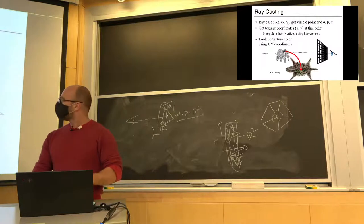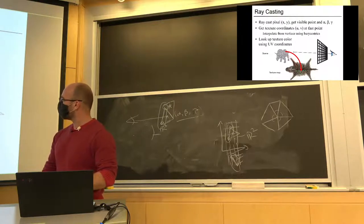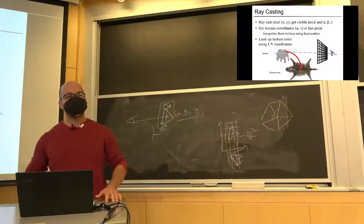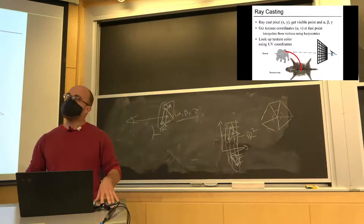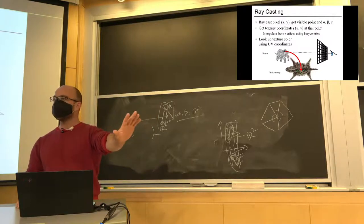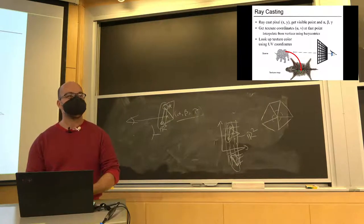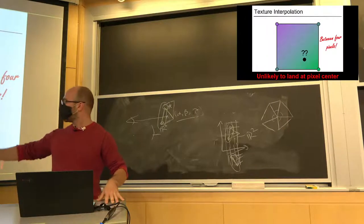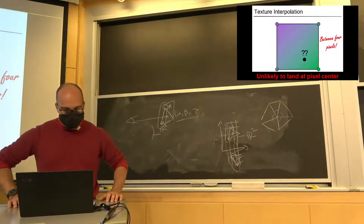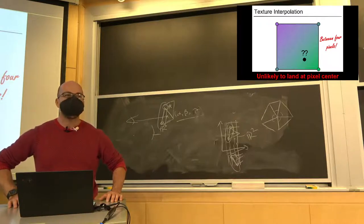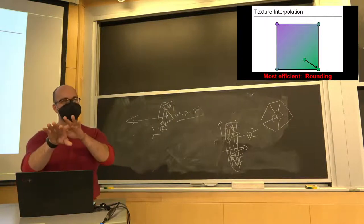There's also a different issue: magnification, where I get up close to the object. One issue is that maybe the texture map is not detailed enough. The second is that most likely your texture lookup is not going to land on an integer lattice — it's going to land somewhere in between your pixels. So what should you do? Average. The simplest thing is just to round and take the closest pixel color, but then you'll see discontinuities in the texture — little squares. So what most people do is bilinear interpolation.